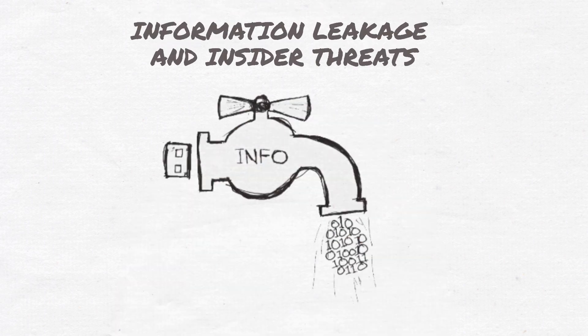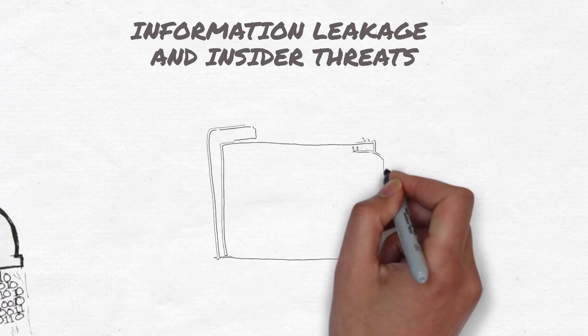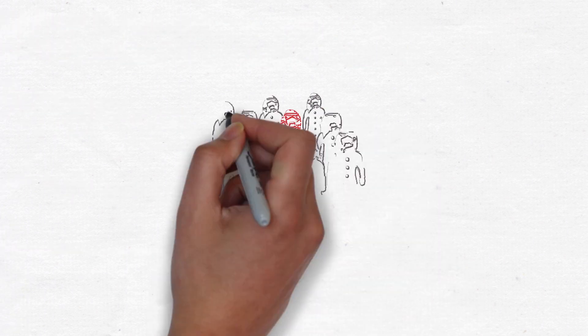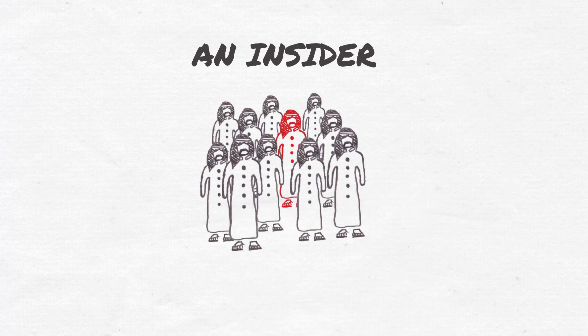Information Leakage and Insider Threats. The most important thing to our organization is our information. The easiest way for someone to cause harm to our organization is by compromising an insider.